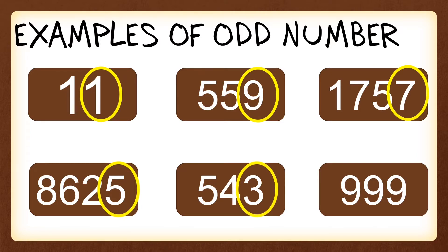And for the last number, nine hundred ninety-nine, there is a nine on the last digit. So all the encircled numbers are odd numbers. All of these — eleven, five hundred fifty-nine, one thousand seven hundred fifty-seven, eight thousand six hundred twenty-five, five thousand five hundred forty-three, and nine hundred ninety-nine — are examples of odd numbers because their last digit is either one, three, five, seven, or nine.